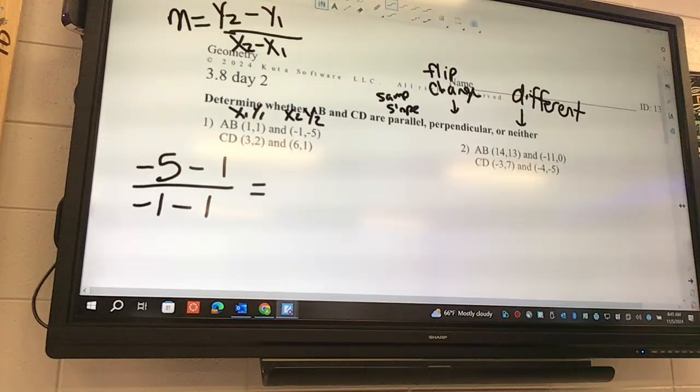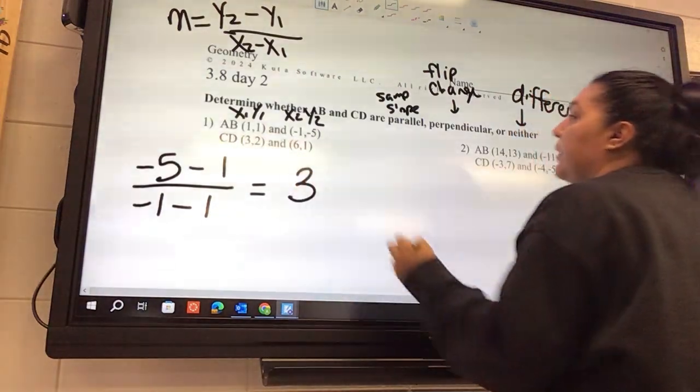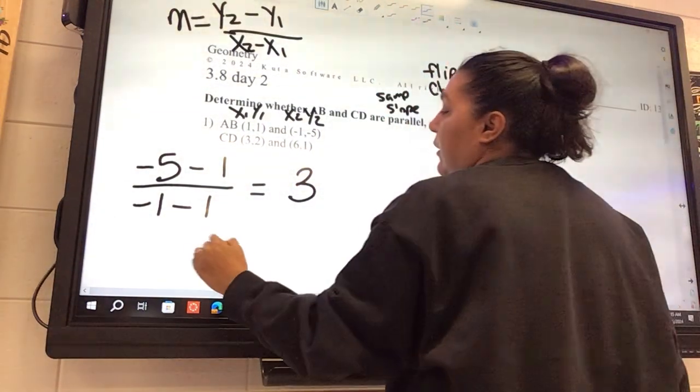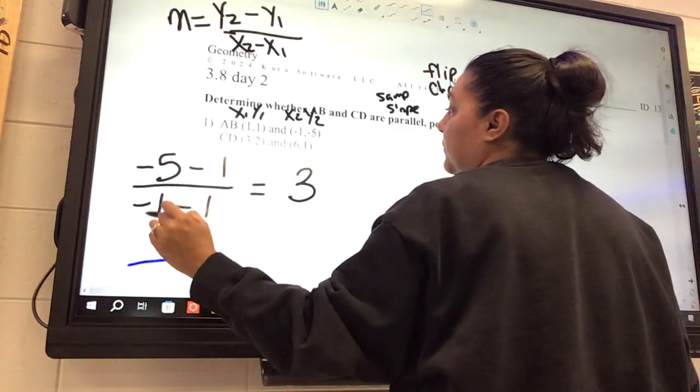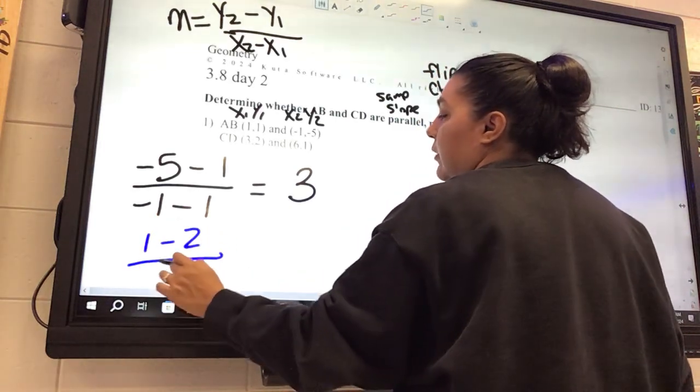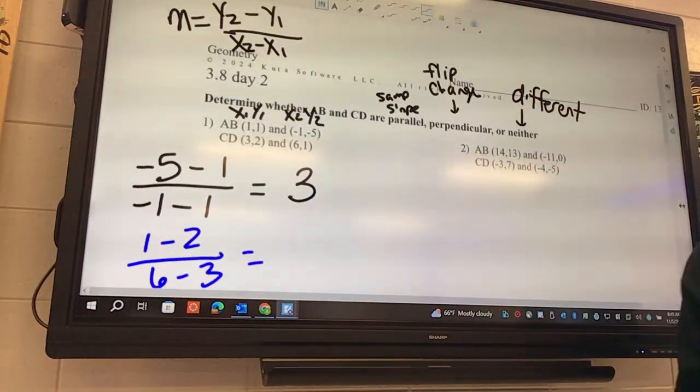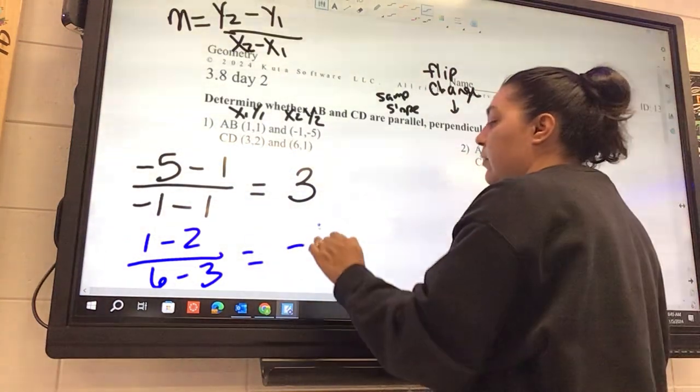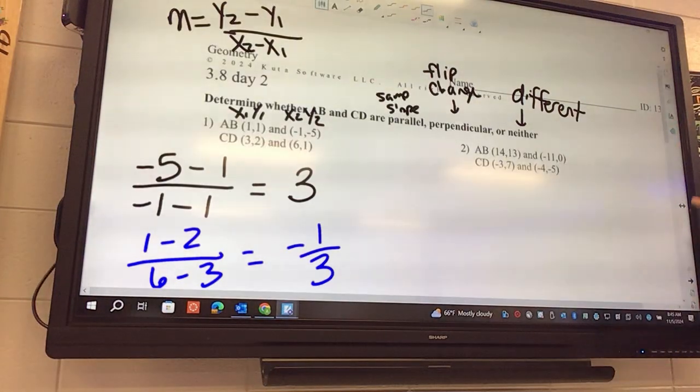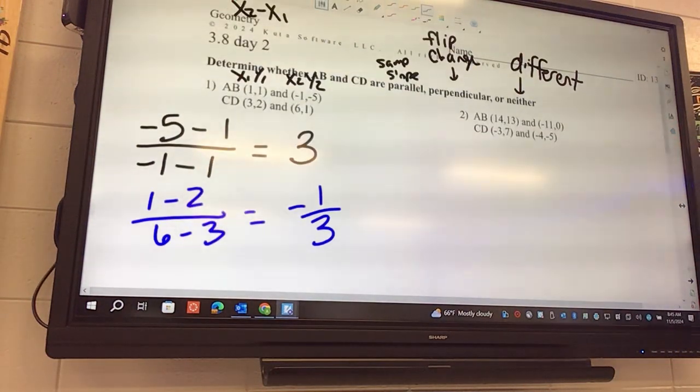Three. Somebody agree? Okay, so that's for the first one. The second one is going to look like 1 minus 2 over 6 minus 3. Negative 1 over 3. Negative 1 over 3.